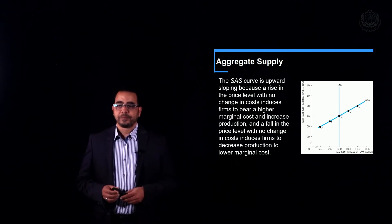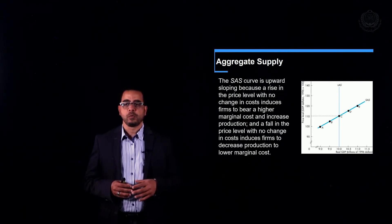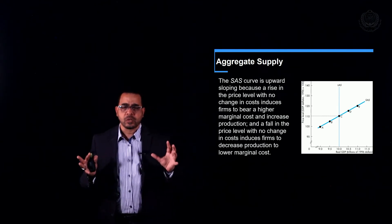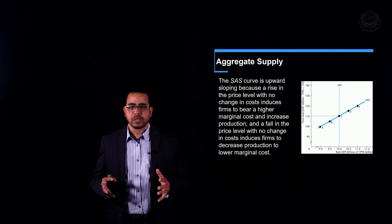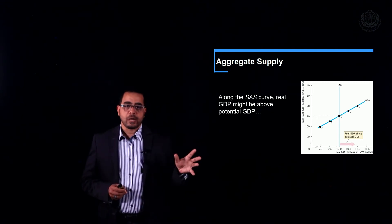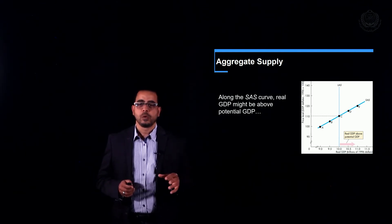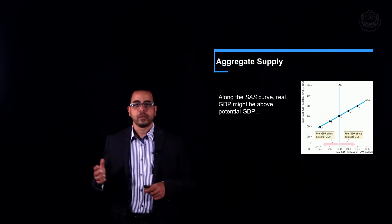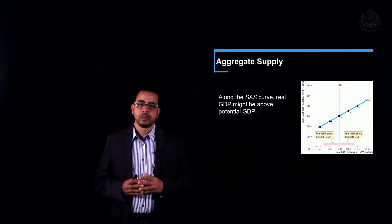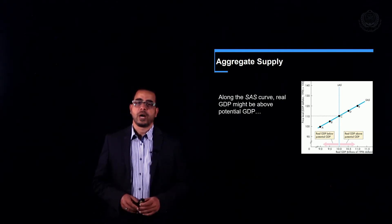The SAS is upward sloping because a rise in price level with no change in cost leads to higher marginal profit, increasing production, while a fall in price level with no change in cost causes firms to decrease production. The short-run aggregate supply can be above the potential GDP — meaning unemployment is below the natural rate — or under the potential GDP — meaning unemployment is above the natural rate.